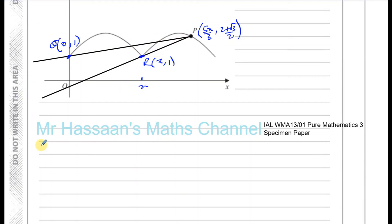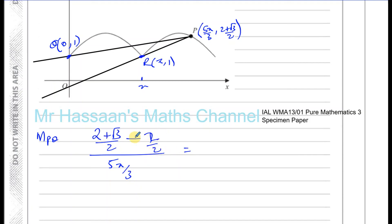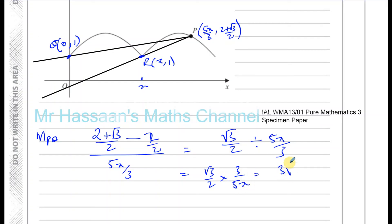The gradient of line PQ: change in y is (2 + root 3)/2 minus 1, which equals (2 + root 3)/2 minus 2/2 = root 3 over 2. Change in x is 5 pi over 3 minus 0 = 5 pi over 3. So gradient of PQ equals (root 3 / 2) times (3 / 5 pi) = 3 root 3 over 10 pi.